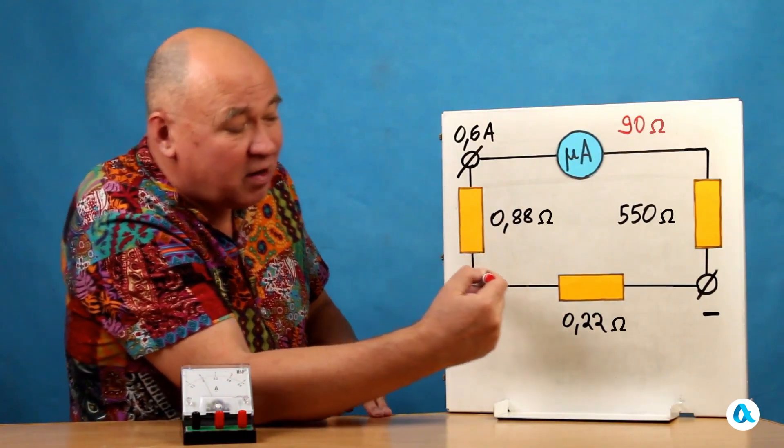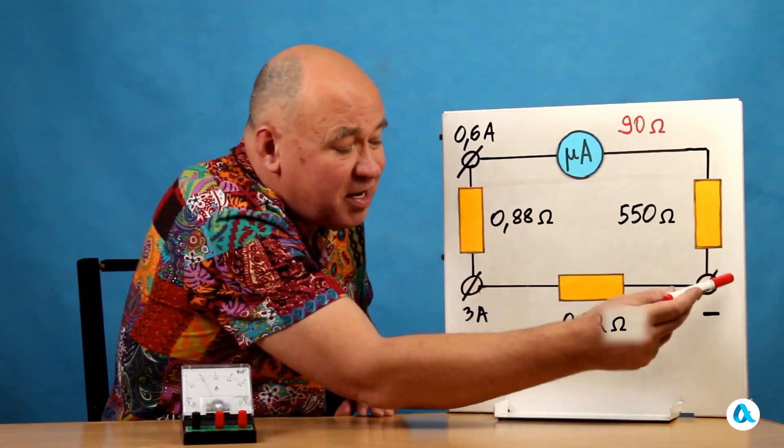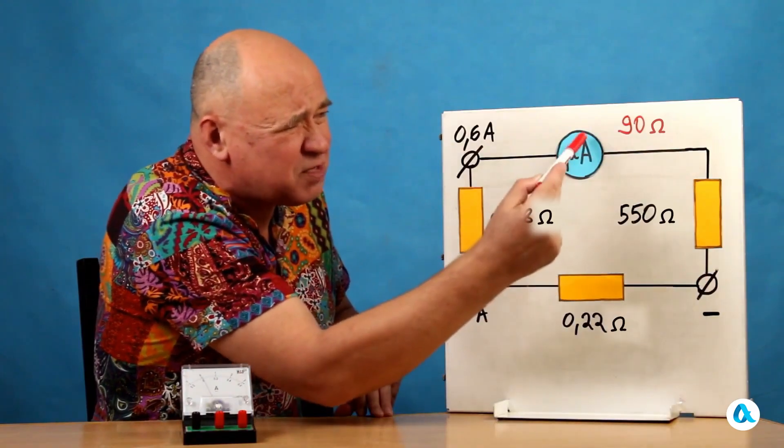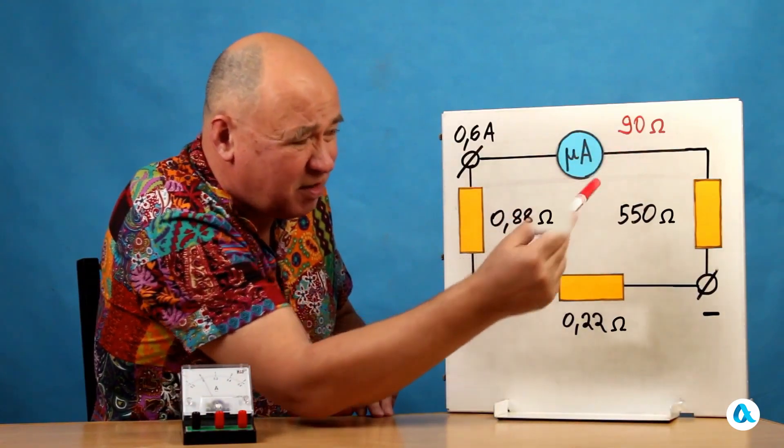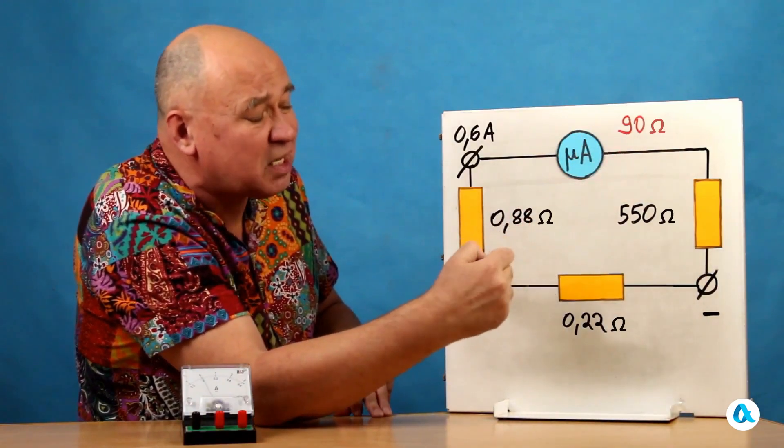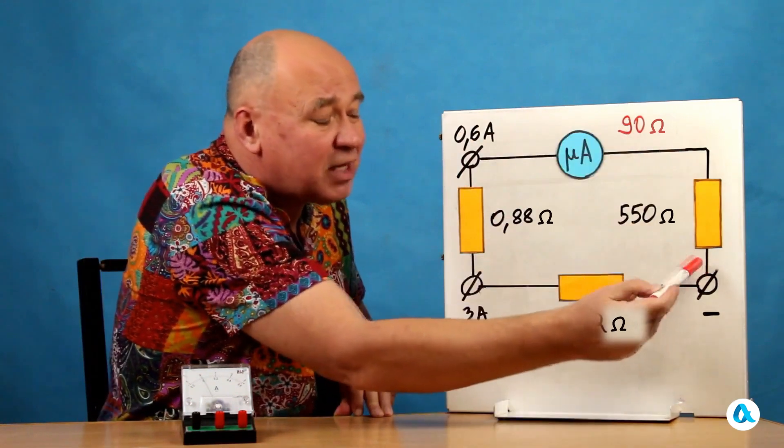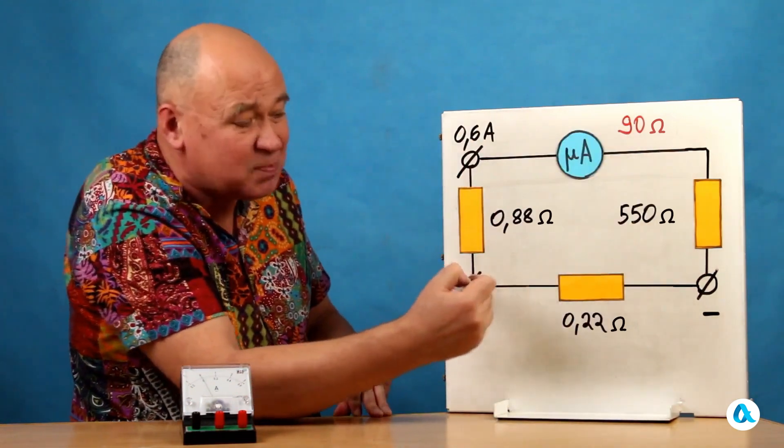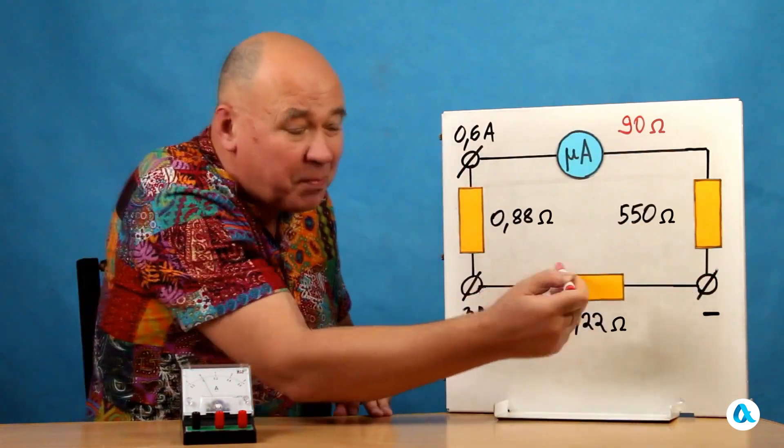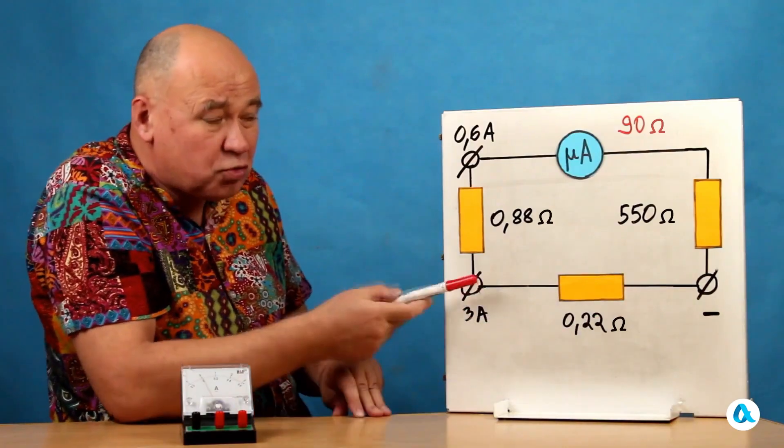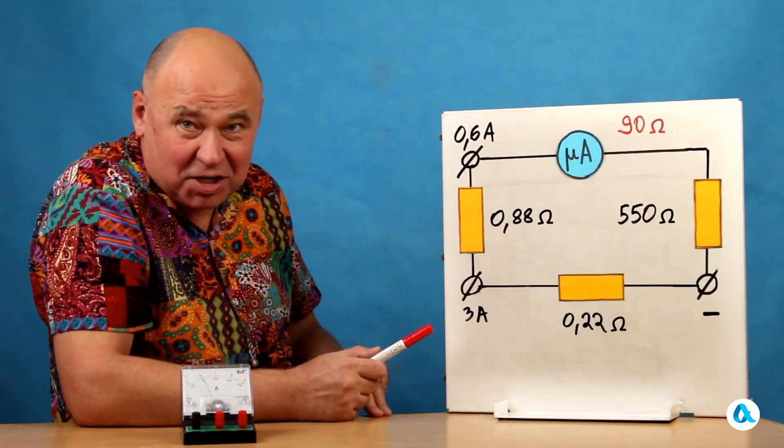Now, look. Here, we have a resistance of 0.22 ohms. And the device itself also has a resistance of 90 ohms. So, overall, the resistance of this branch is 3,000 times greater than the resistance of this direct path. That's why the current that branches off here is 3,000 times smaller.